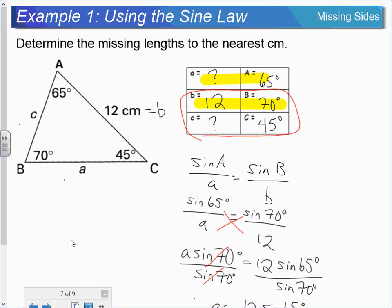Hi everybody, Mr. Stewart here. I thought I would create a screencast that could help follow up and complete the examples that we were working on yesterday for the sine law. So very quickly, remember that the sine law is used in non-right triangles and specifically you can use it to find missing side lengths and also missing angles as we'll see in a moment.